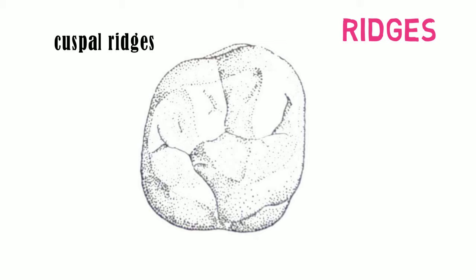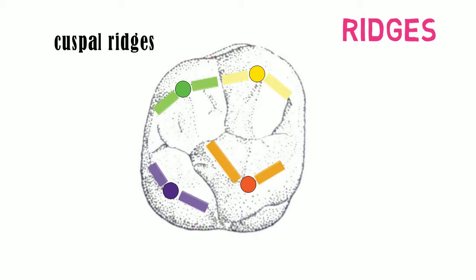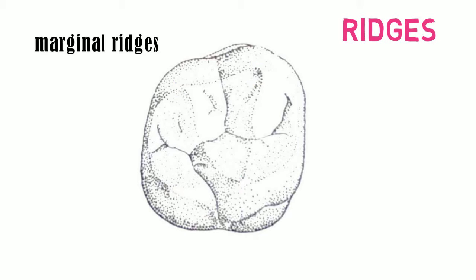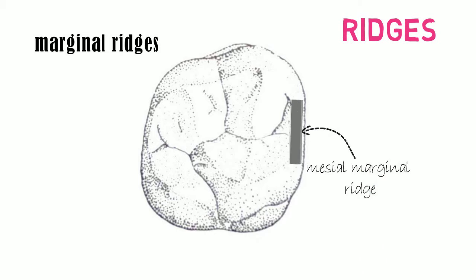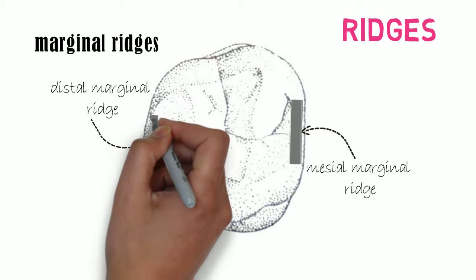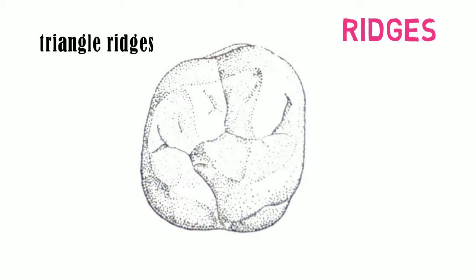There are numerous ridges in the maxillary first molar. Starting with the cuspal ridges, each of the functional cusps has two cuspal ridges — one mesial cuspal ridge and one distal cuspal ridge. Two marginal ridges are present: the mesial marginal ridge at the mesial outline and the distal marginal ridge at the distal outline. Four triangular ridges, one for each functional cusp, run from the cusp tip towards the center.